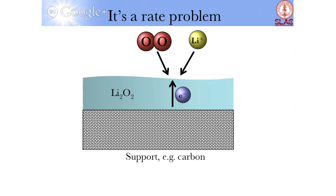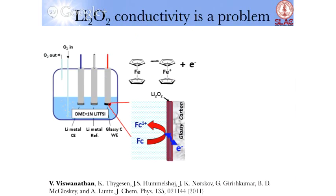To isolate what causes this problem, experiments were done at IBM by Girish and Brian. The experiment is done in a flat electrode with an oxygen bubble and a high concentration of lithium ions. This allows you to remove the lithium and oxygen transport components from the picture.